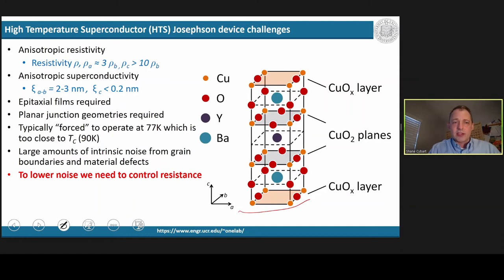Also, researchers typically force these devices to operate at 77 Kelvin because that's the boiling point of liquid nitrogen. But the TC is just 90 Kelvin, and that's too close. I'll talk more about that at the end of my talk.